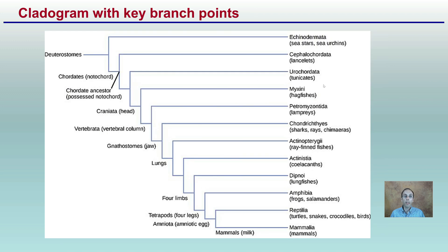Lastly, the cladogram with key branch points gives another way to break things apart — looking at having vertebrae, jaws, lungs, forelimbs, legs, or an amniotic egg, and how things would be separated by what is considered more complex. While this is a very diverse phylum, this hopefully makes it easier to associate physical features when looking at developing branch points within that phyla.